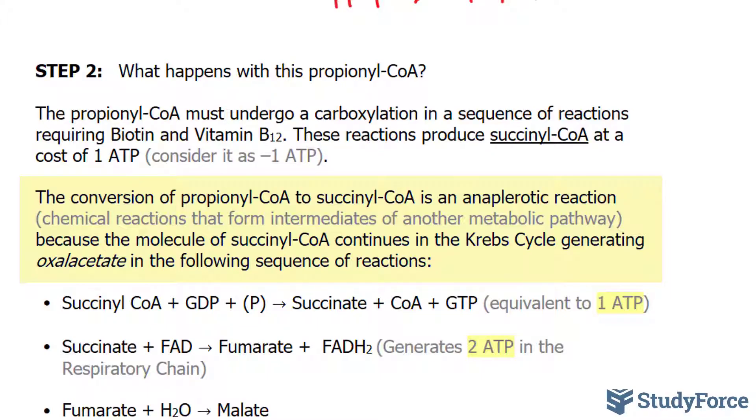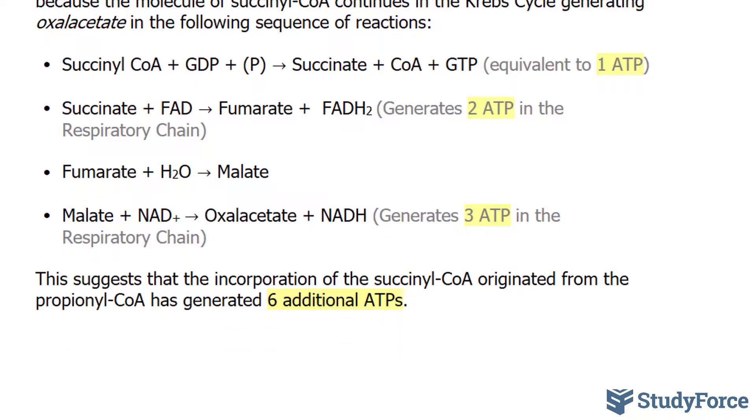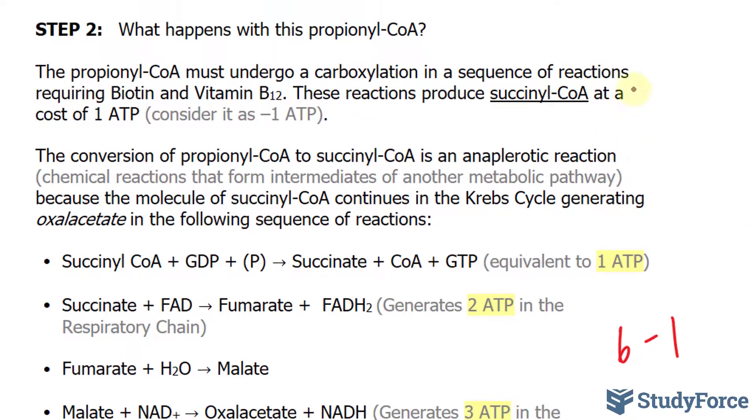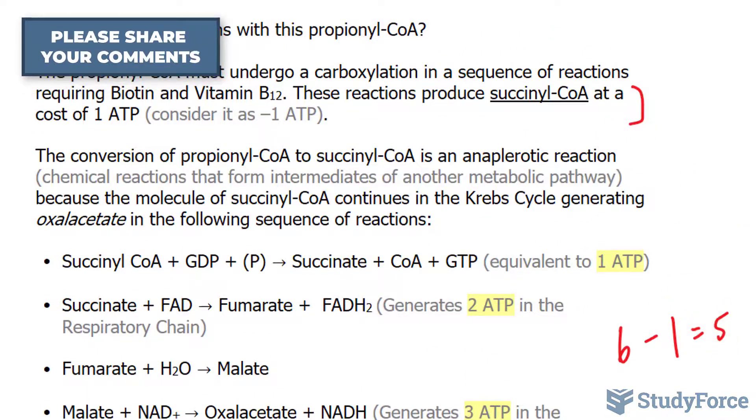Because of this, the molecule of succinyl-CoA continues in the Krebs cycle, generating oxaloacetate in the following sequence of reactions. Notice that in various levels of this reaction, ATPs are being formed. In the first part, one ATP equivalent is formed. Two ATPs are generated in the second, and three are in the last. One plus two plus three is equal to six, minus the one that we accounted for here, that yields five.